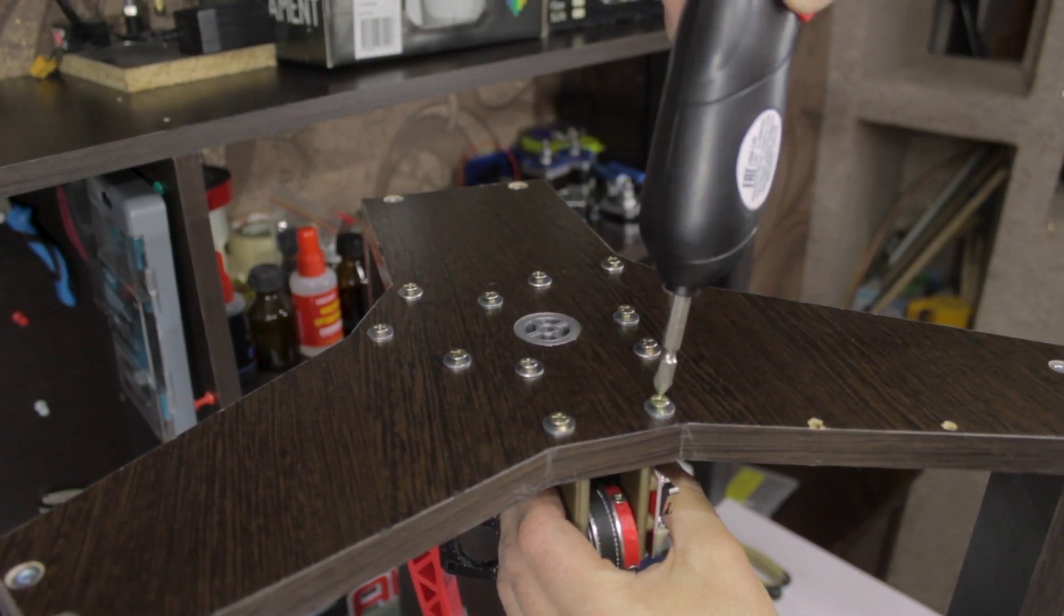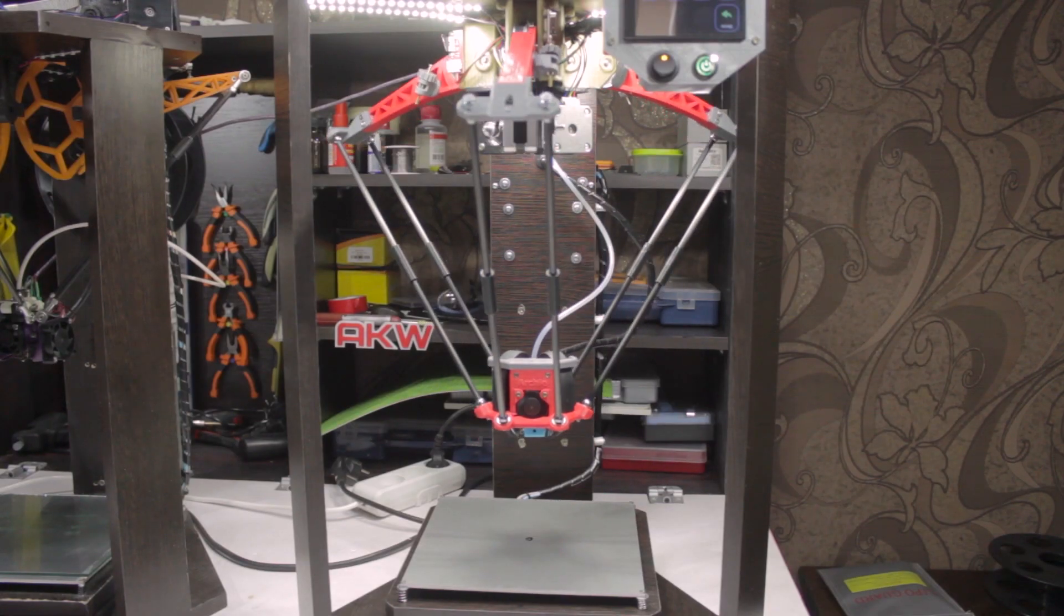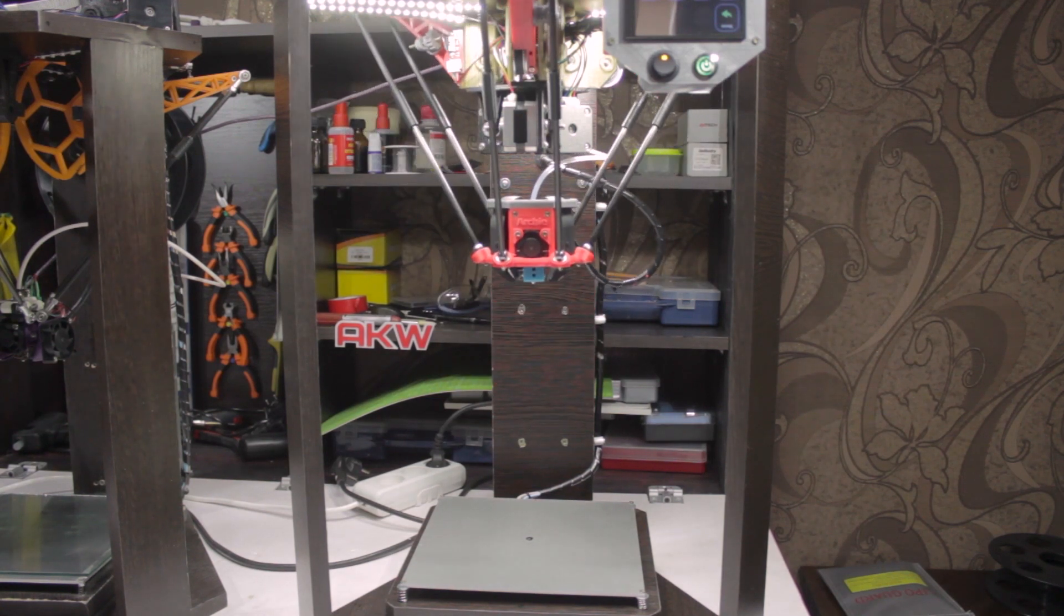There are no detailed video guides for assembly and configuration, because such printers based on Delta robots are not produced, at least not yet. However, it can be made and assembled independently.